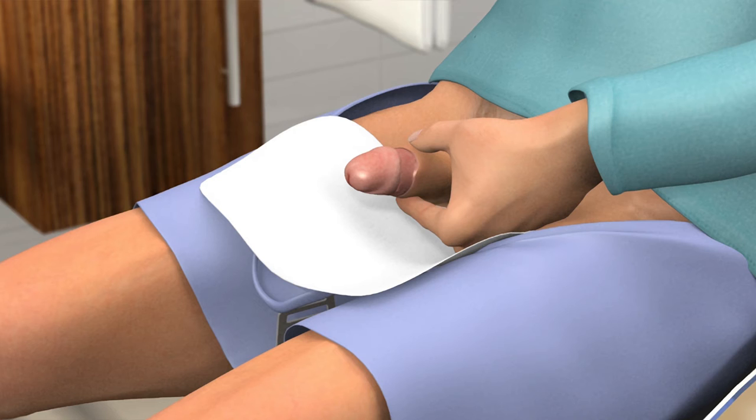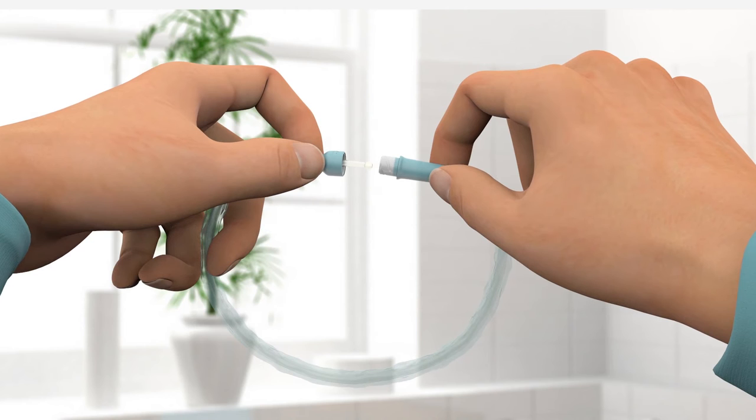Take the catheter out of the packaging and twist the lock to open. Make sure to hold both ends of the catheter upwards to avoid spillage of the liquid inside the sleeve that covers the catheter.